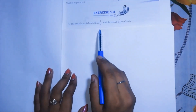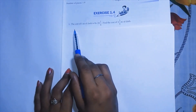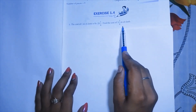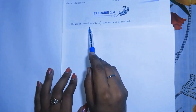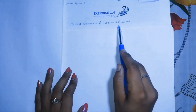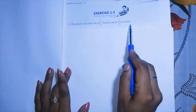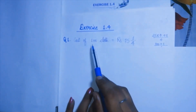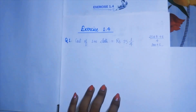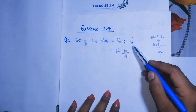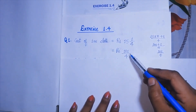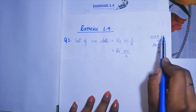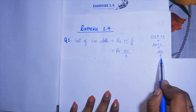The first question: the cost of one meter of cloth is rupees 25 and 1/4. Find the cost of 5 and 3/4 meters of cloth. We have the cost of 1 meter of cloth, and we have to find the cost of 5 and 3/4 meters. Since we are going from one to more than one, we multiply. First, we write the cost of 1 meter of cloth, and since it is in mixed form, we convert it to a simple fraction: 101 by 4.